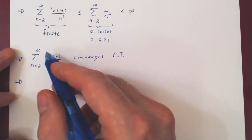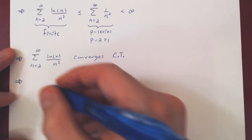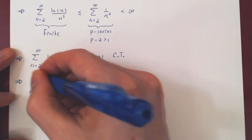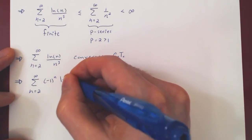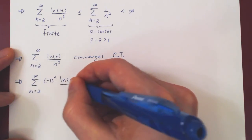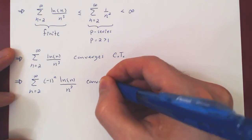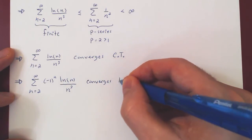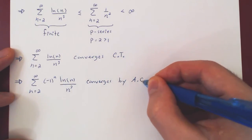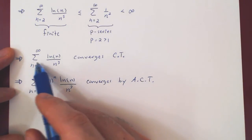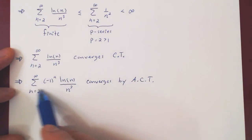And when a series of terms in absolute value converges, automatically, the series of the terms without the absolute value, so the initial series also converges, by, of course, the absolute convergence test. Because absolute convergence implies convergence.